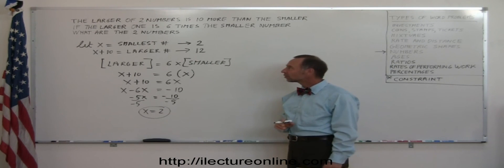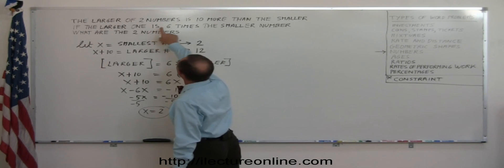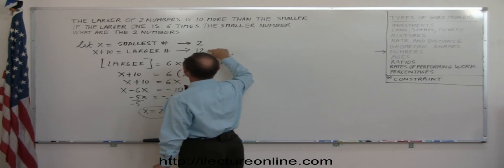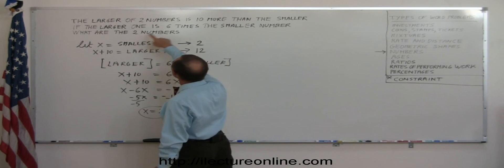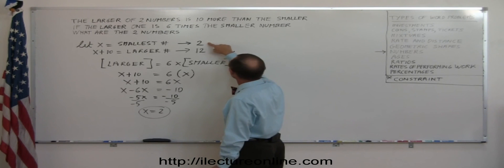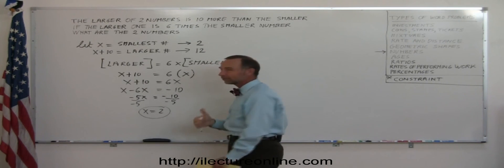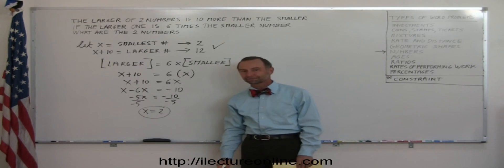Now just to make sure we did this correctly, let's go back and make sure it matches. The larger of the two numbers is ten more than the small one. Twelve is ten more than two, so that works. And the next one says if the larger one is six times the smaller number. Well, let's see, twelve is six times two. That's true. Six times two is twelve. So we did it, and that's the answer.